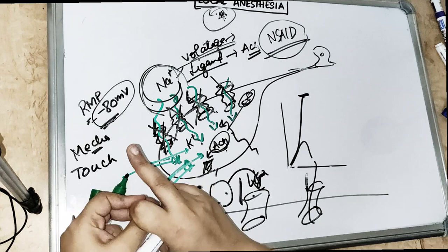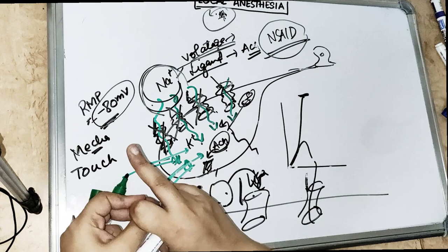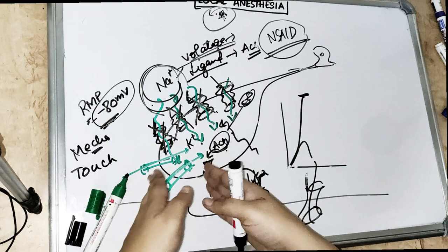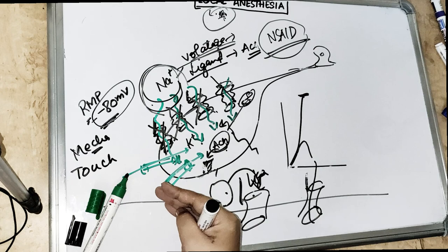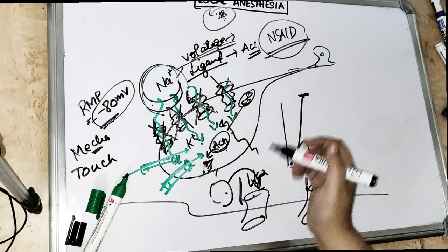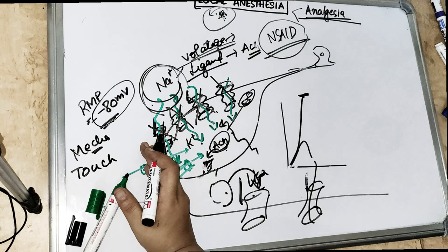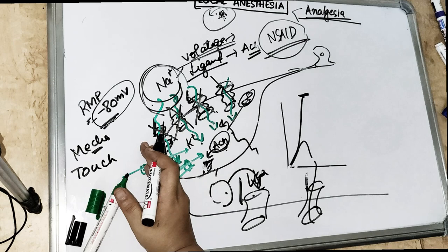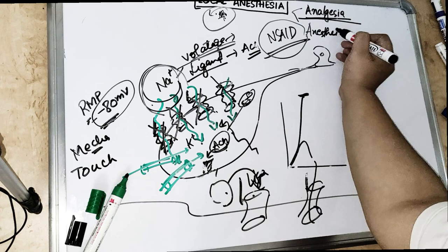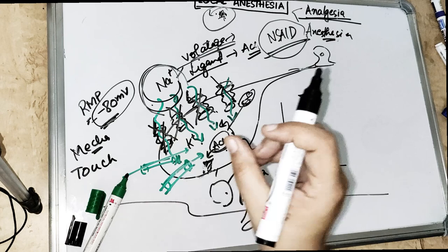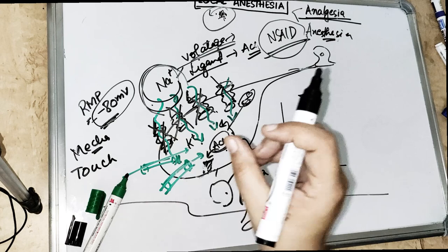There are two things: anesthesia and analgesia. Analgesia is when a pain stimulus is already there — when the patient comes to you already having pain, you give a painkiller, not local anesthesia. So analgesia is when the patient is already having pain and you stop that pain stimulus. Anesthesia is before the pain stimulus — you are blocking the sodium voltage gated channel in order to stop the pain.